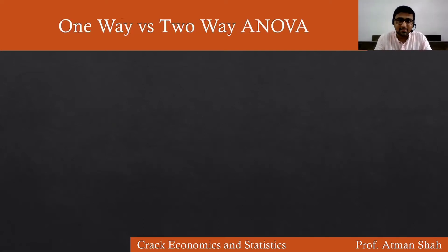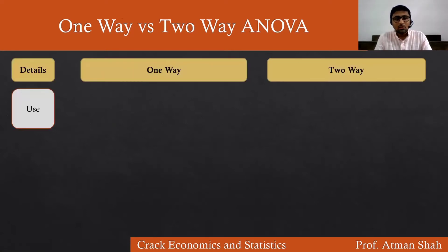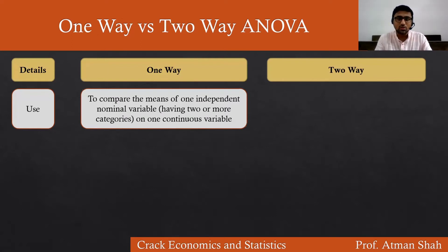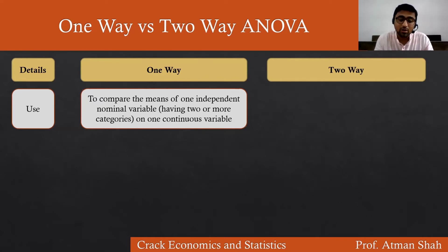Now let's understand the comparison of one-way and two-way ANOVA. One-way ANOVA is used to compare the means of one independent nominal variable having two or more categories on one continuous dependent variable — for example, level of education, with categories: school pass-out, graduate, and post-graduate students. If we have only two categories, the independent samples t-test is used. One-way ANOVA is used when we have more than two categories in our nominal independent variable.